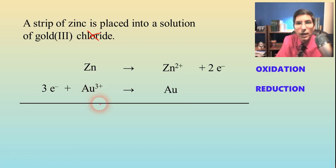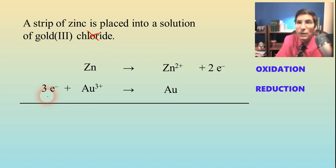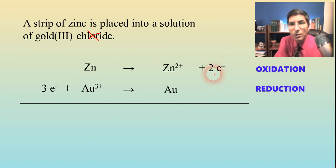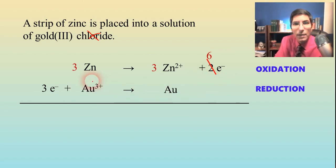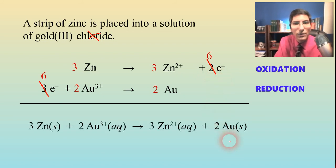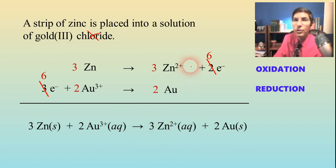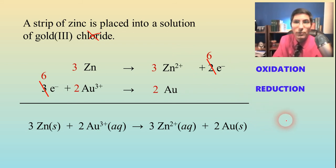Now let's add these reactions together. The electrons don't cancel out as nicely as before — you never want electrons in an overall balanced equation. So to make the electrons cancel, I'm going to multiply the first half reaction by three and the second one by two. Now we have six electrons in each that cancel out when added together. The overall balanced equation comes out balanced without having to separately worry about atom counts.